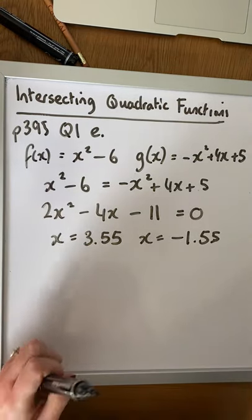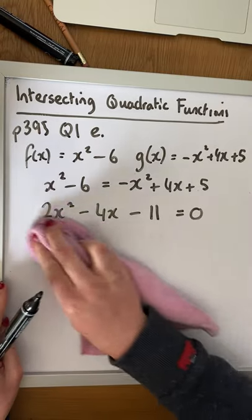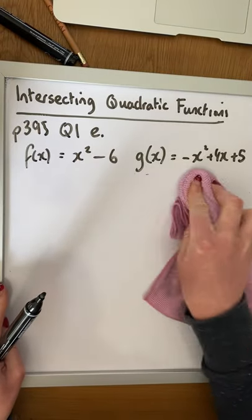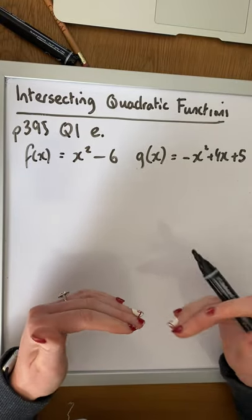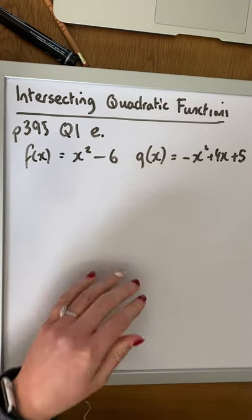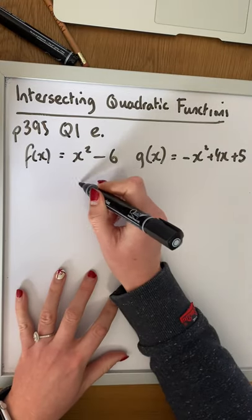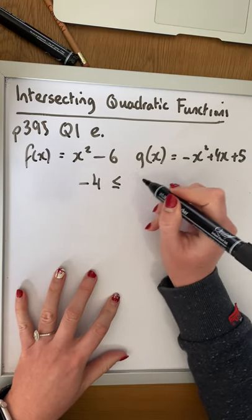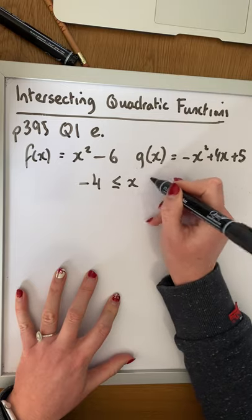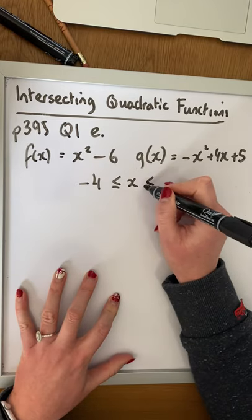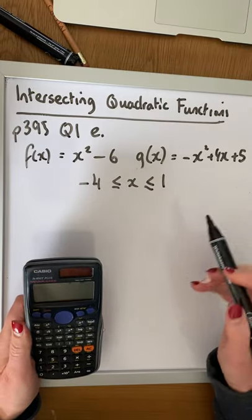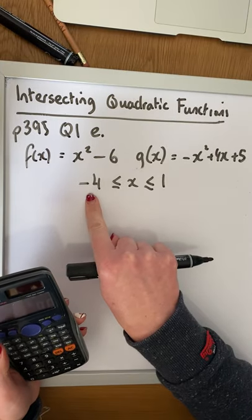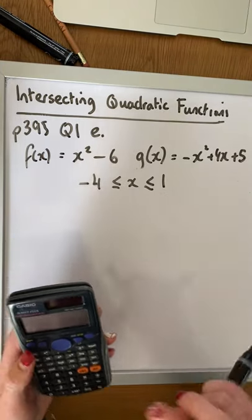Now let's look at solving it graphically. So the first thing we need to do with all questions is read the question carefully, and you'll be given a range of values that you want to look at. So in this range of values, when we want to solve it graphically, we are asked to look at the range minus 4, less than or equal to x, less than or equal to 1. So when we're looking at our table function in the calculator to put these values in, we look at our start value as minus 4, end value as 1.